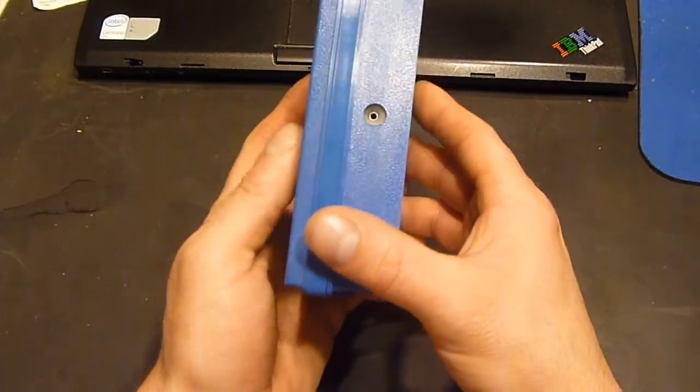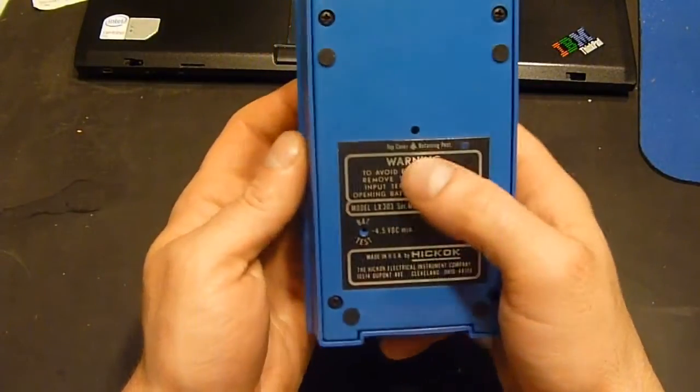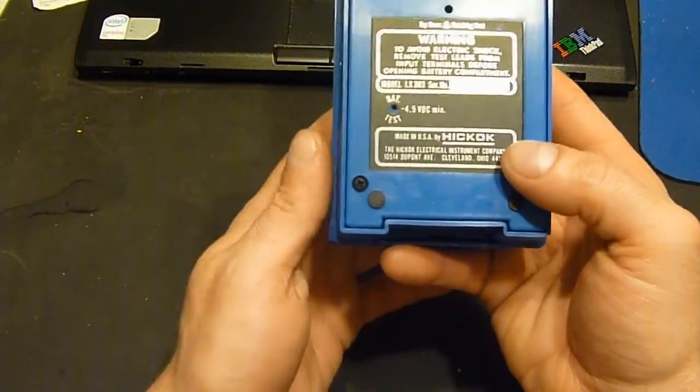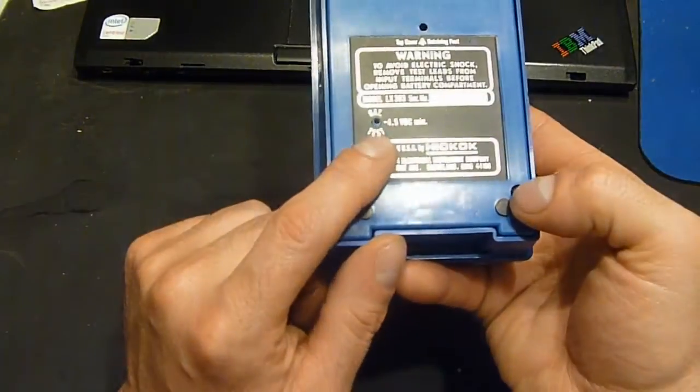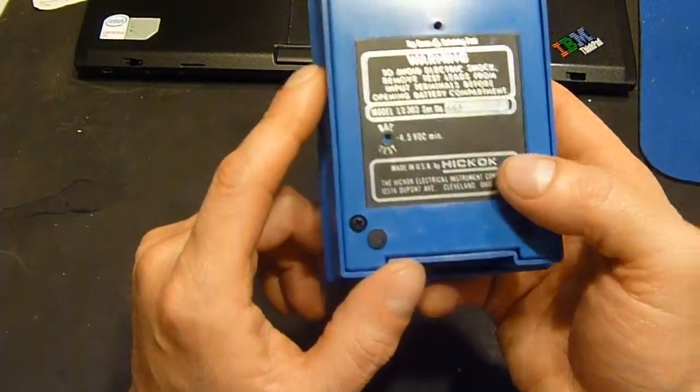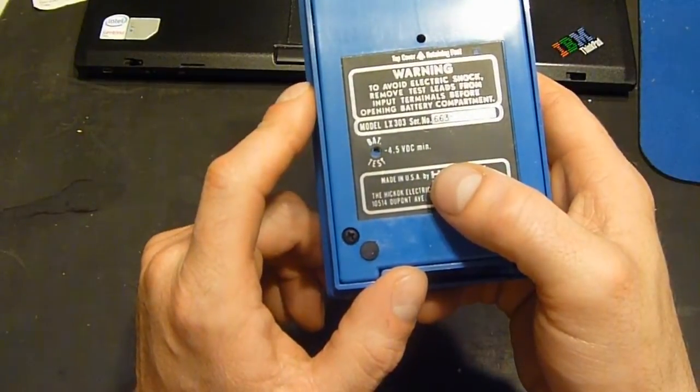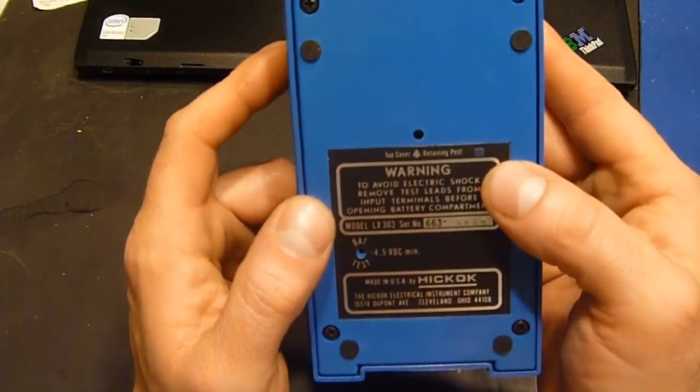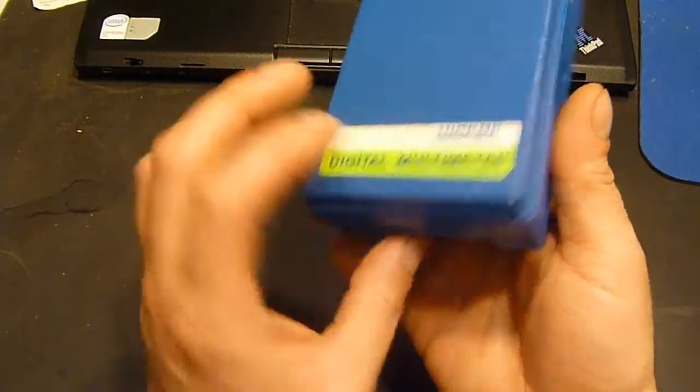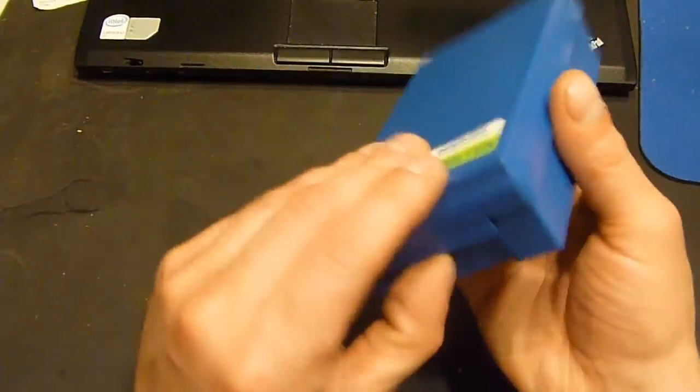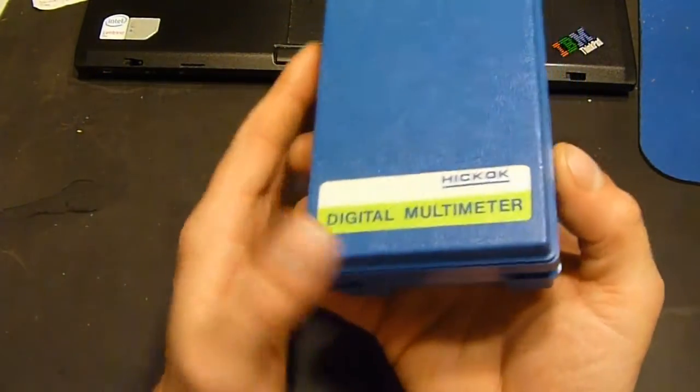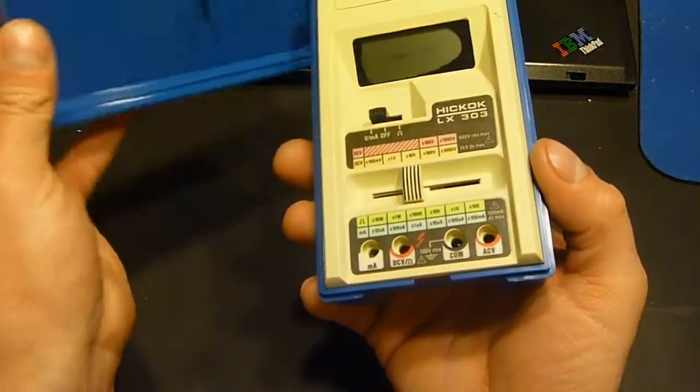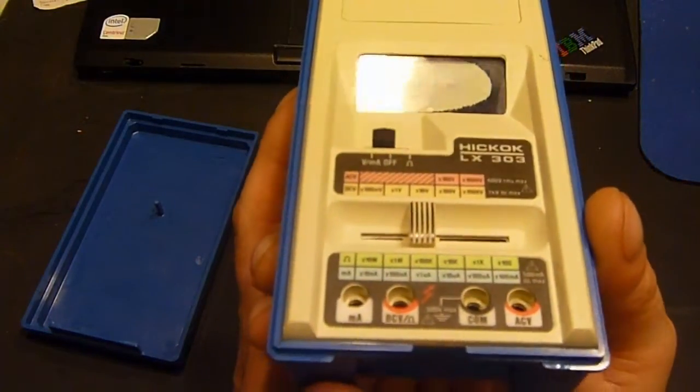It's a nice little neat little portable multimeter. Top cover retaining post, battery test. So I guess to test your battery, you just take your probe and you stick it in the hole. Model number LX303, serial number 663-4600. Okay, so how do we open it? From right here. And the clock is done. So, here we go. And apparently we've got some LCD issues.